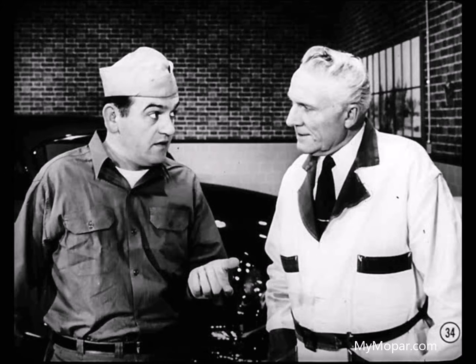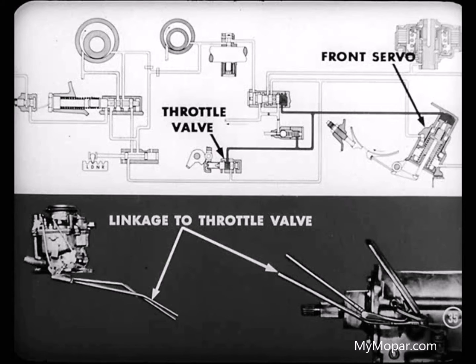That line pressure must exert enough force on the front servo to keep the band from slipping. That's right, Bill. But as you begin to accelerate, more force is needed to hold the band from slipping as additional engine torque is applied. We get this additional force by putting a throttle valve in the system.